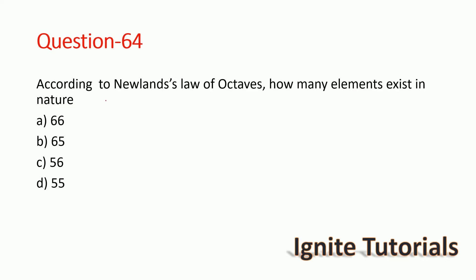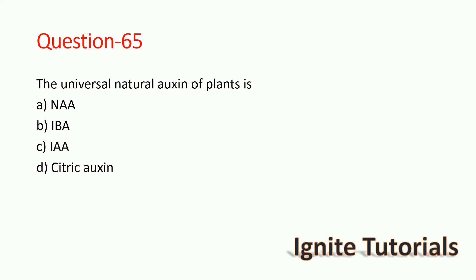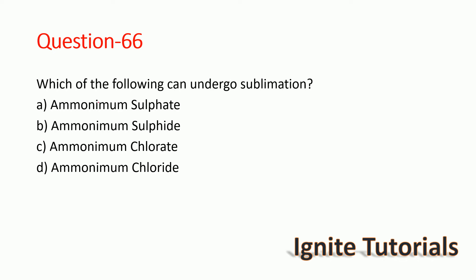Question 64: According to Newlands' Law of Octaves, how many elements exist in nature? The correct answer is 56 — 56 elements exist in nature. Question 65: What is the universal natural auxin of plants? The correct answer is IAA — option C is correct.